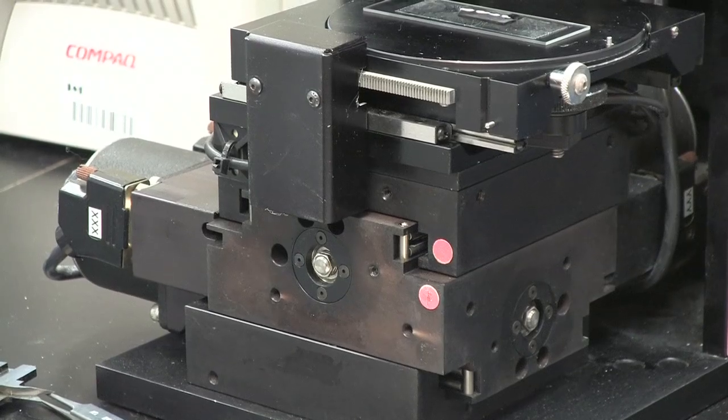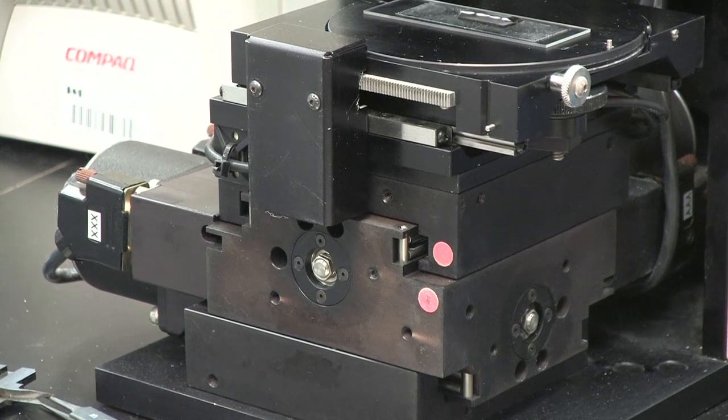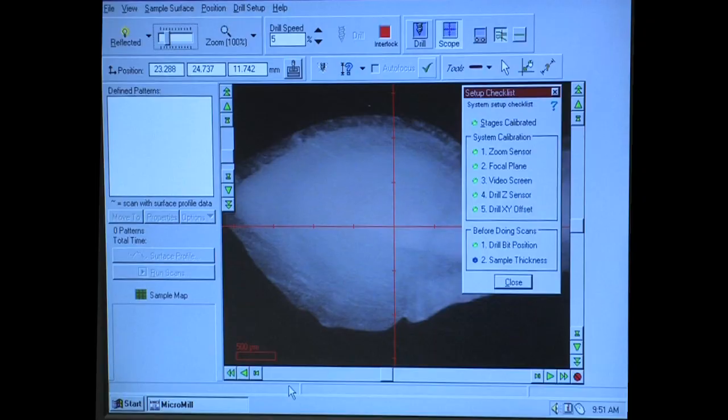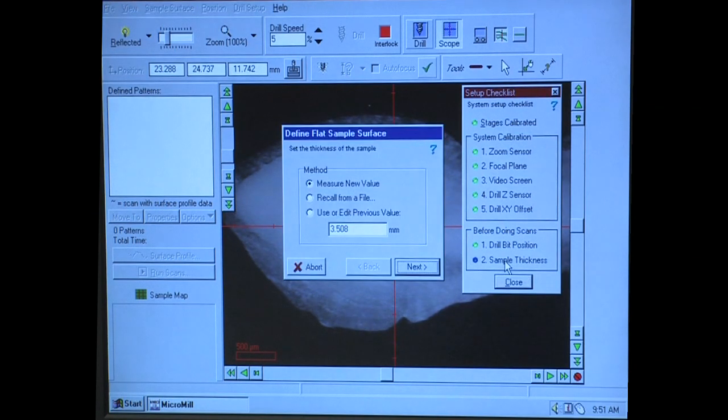It uses a three-axis stage for positional accuracy to one micron. All operations of the micromill are controlled by the user through the computer. In addition to this video, the black binder beside the micromill computer has all the instructions listed.